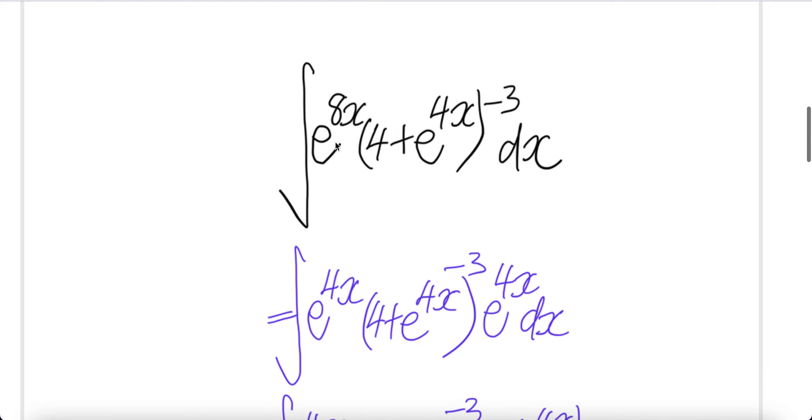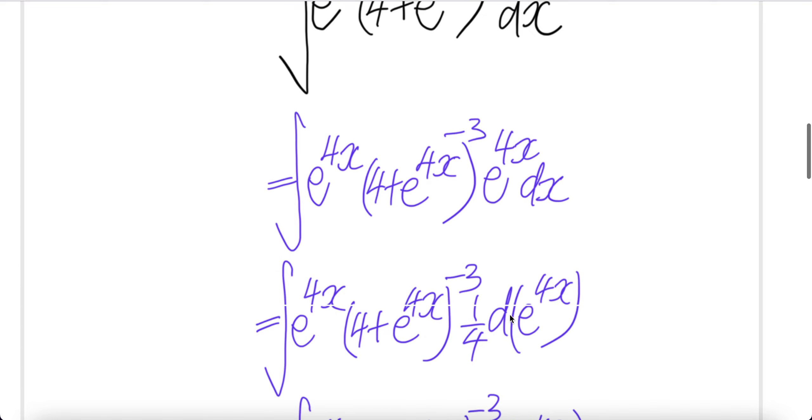We're going to peel off e to the power of 4x from here. You get remaining e to the power of 4x. Put the other e to the power of 4x here. Push this into dx. The derivative of e to the power of 4x is e to the power of 4x times the derivative of this is 4. Basically this is the same thing as that.